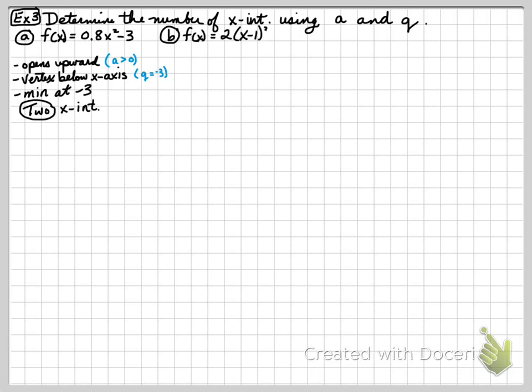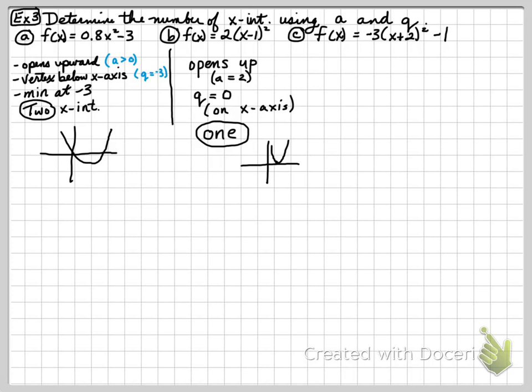In our second example, f of x is 2 times x minus 1 squared. And our third one is f of x equals negative 3 times x plus 2 squared minus 1. So in B, what I notice is that Q is at 0 because there's nothing behind the x minus 1 squared. And when Q is at 0, that means it's only going to just hit the x axis. And if it just touches the x axis, that means it's only going to be 1 x intercept. And it doesn't matter if A was positive or negative. It would just touch the x axis going up or going down. In this case, it opens upwards, so there's a minimum at 0. There's going to be 1 x intercept.